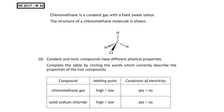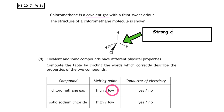This past paper question is from the National 5, 2017, written question 3D. Chloromethane is a covalent gas with a faint sweet odour. Covalent and ionic compounds have different physical properties — complete the table by circling the correct words. For chloromethane: the question tells us it is a gas at room temperature, so the melting point is low. Conductivity is the flow of charged particles; the charged particle in a covalent bond is an electron, and electrons are not free to move, so it does not conduct electricity.